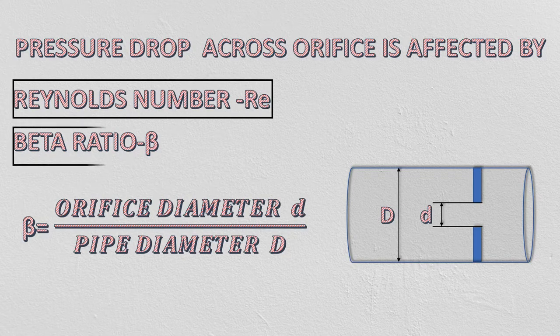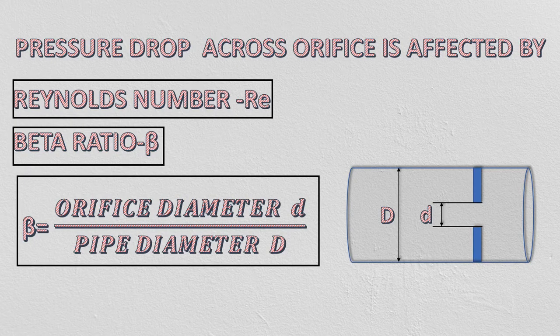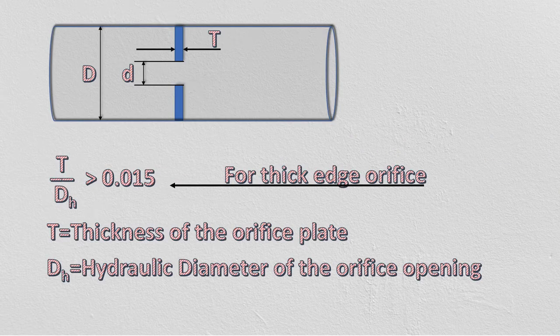Beta is denoted by symbol β and it is the ratio of orifice diameter to the pipe diameter. This equation can be used to calculate pressure drop in thick edge orifice.